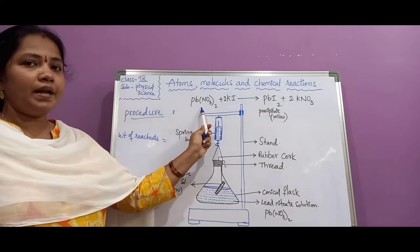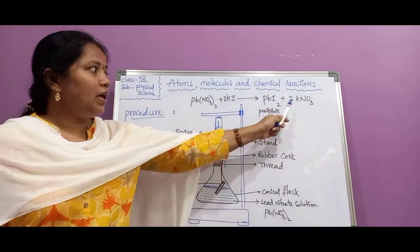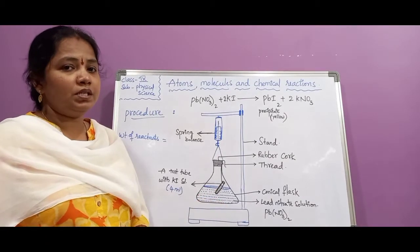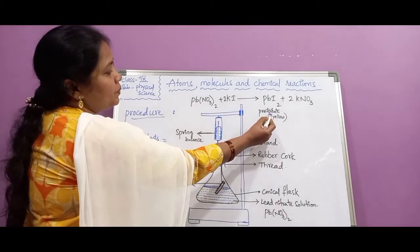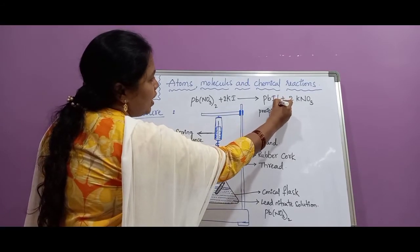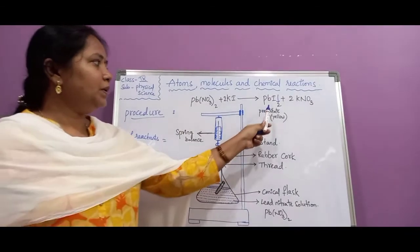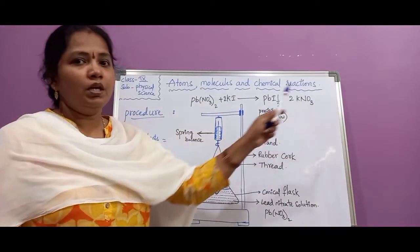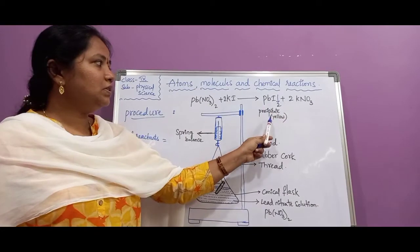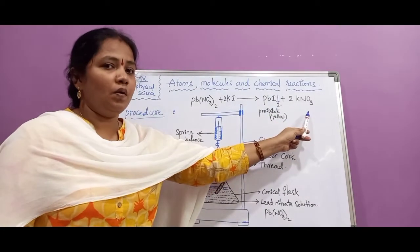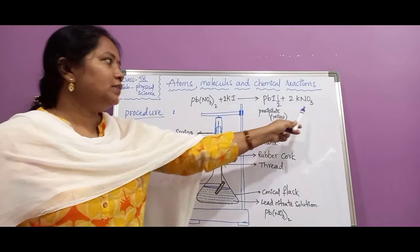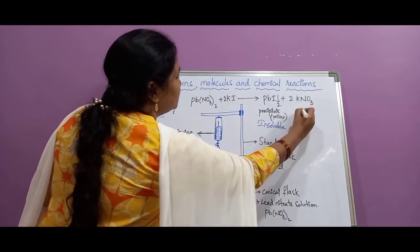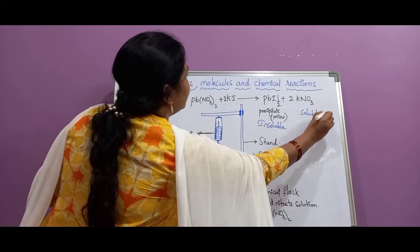When potassium iodide reacts with lead nitrate, we get two products: lead iodide (PbI₂) and potassium nitrate (KNO₃). Lead iodide immediately forms a yellow color precipitate, indicated with a downward arrow. Potassium nitrate is a soluble product. So we get one insoluble precipitate product (lead iodide) and one soluble product (potassium nitrate).